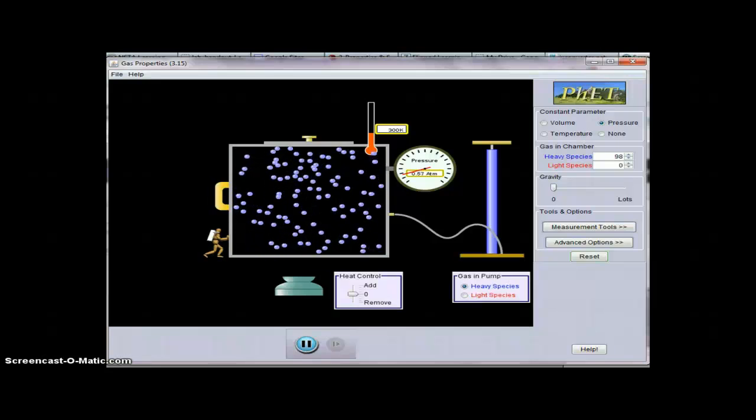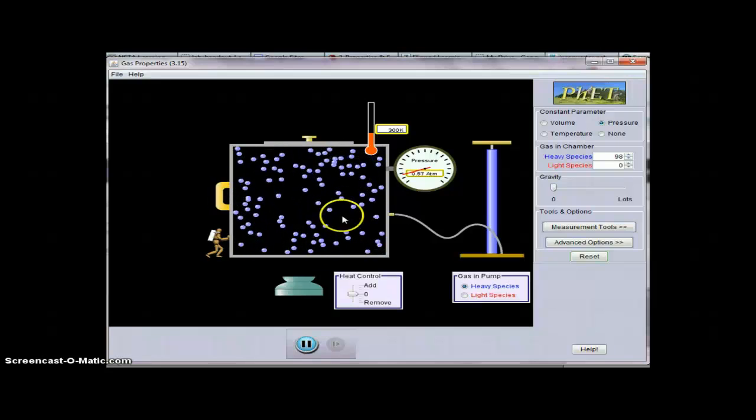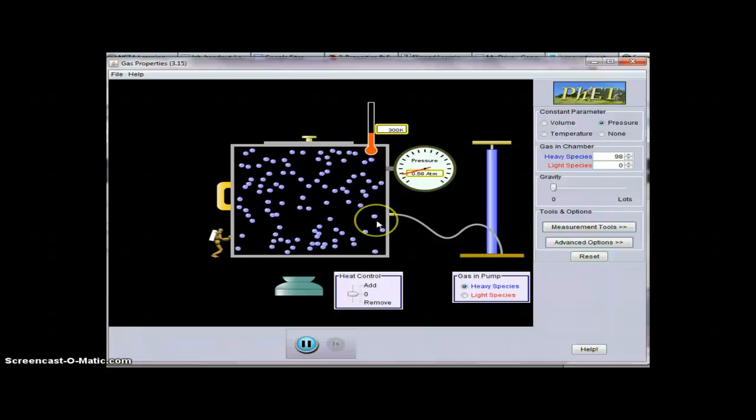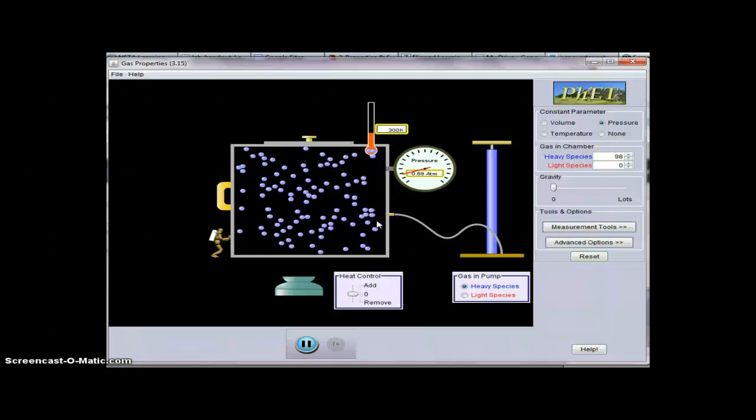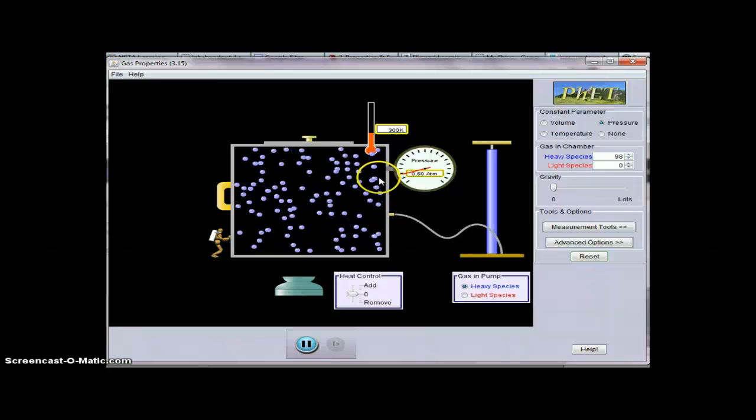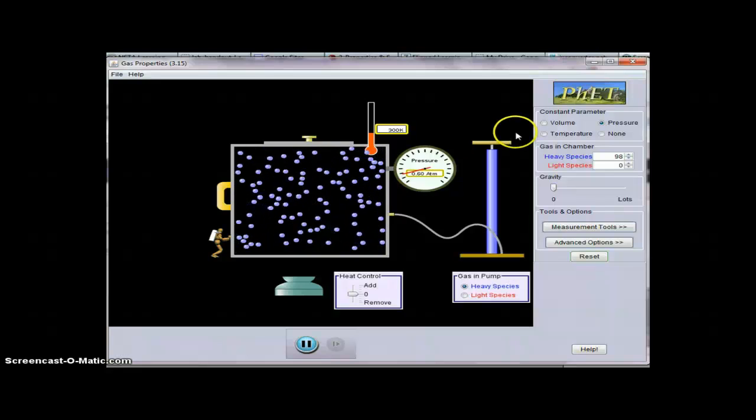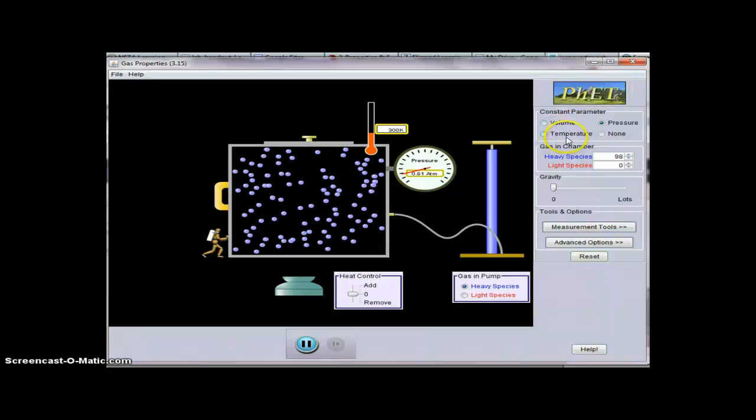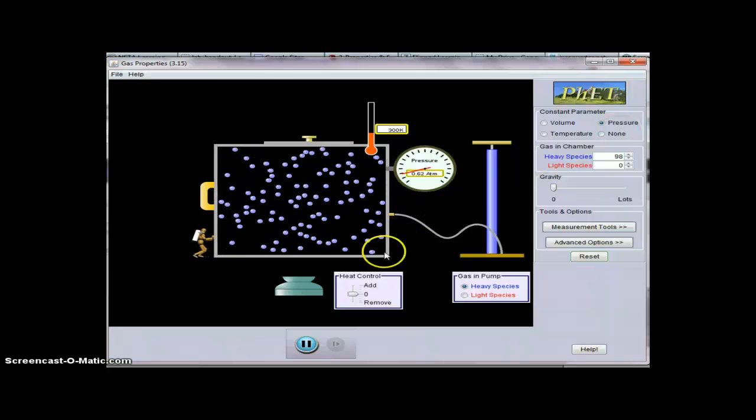Here we see the molecular level view of the gas particles in a box. And to talk about Charles' Law, which talks about the relationship between volume and temperature, we'd need to hold the pressure constant.